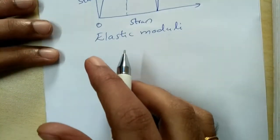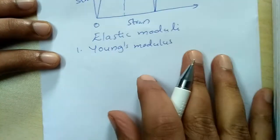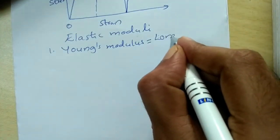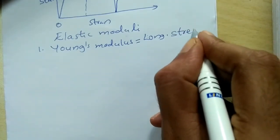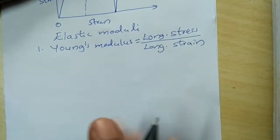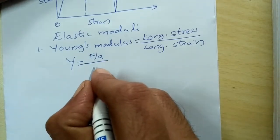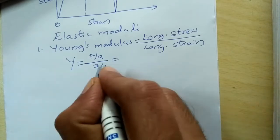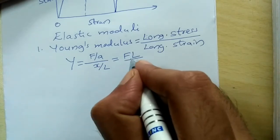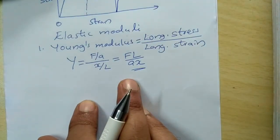The first elastic modulus is Young's modulus, denoted by Y. It is the ratio of longitudinal stress to longitudinal strain. Longitudinal stress is force per unit area (F/A), and longitudinal strain is the change in length divided by original length (x/L). Therefore, Young's modulus Y = FL / Ax.